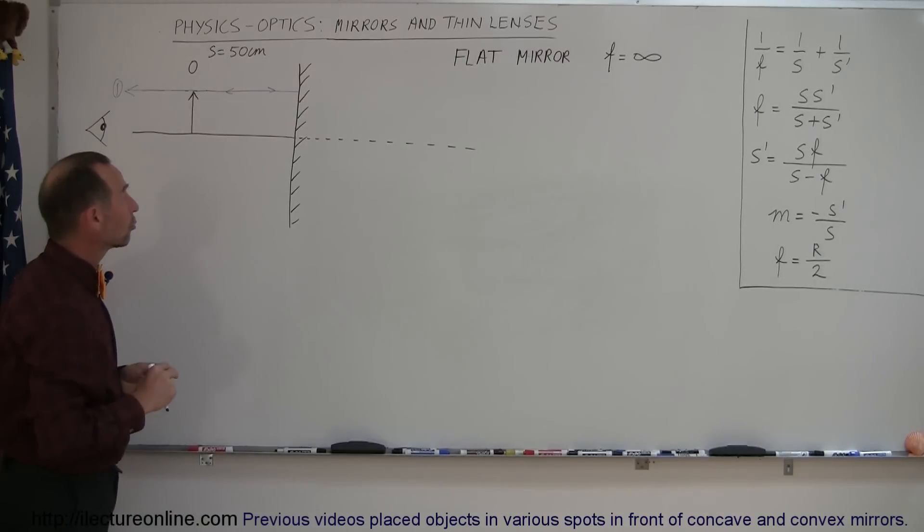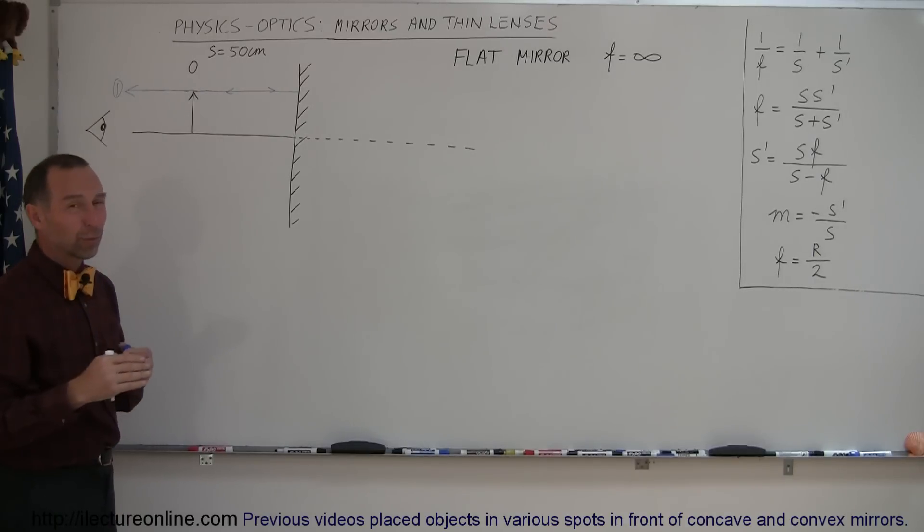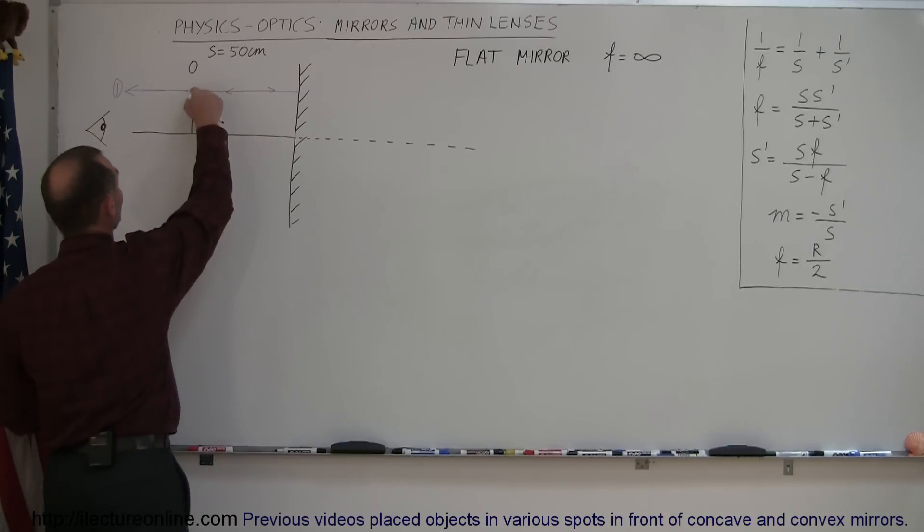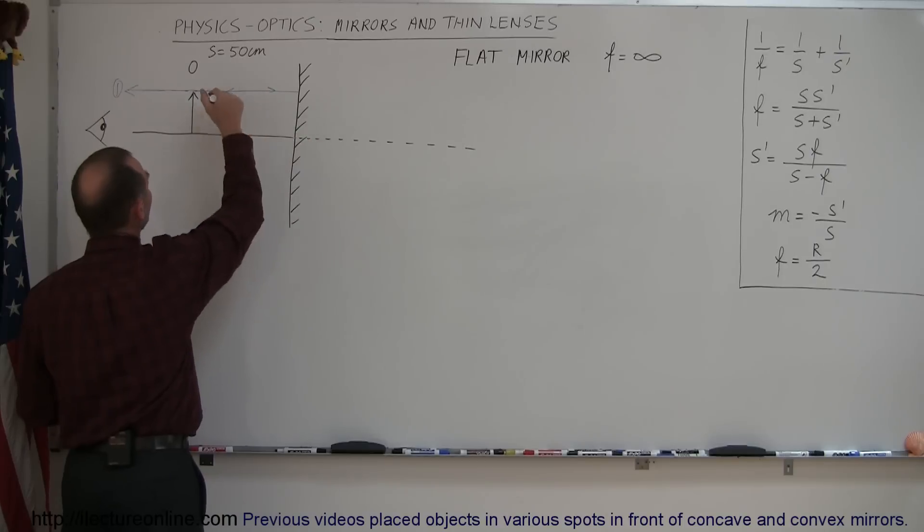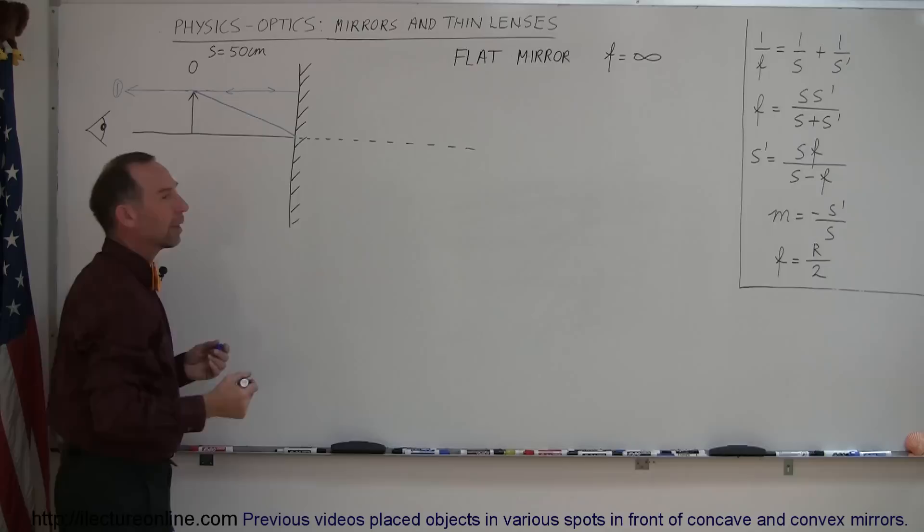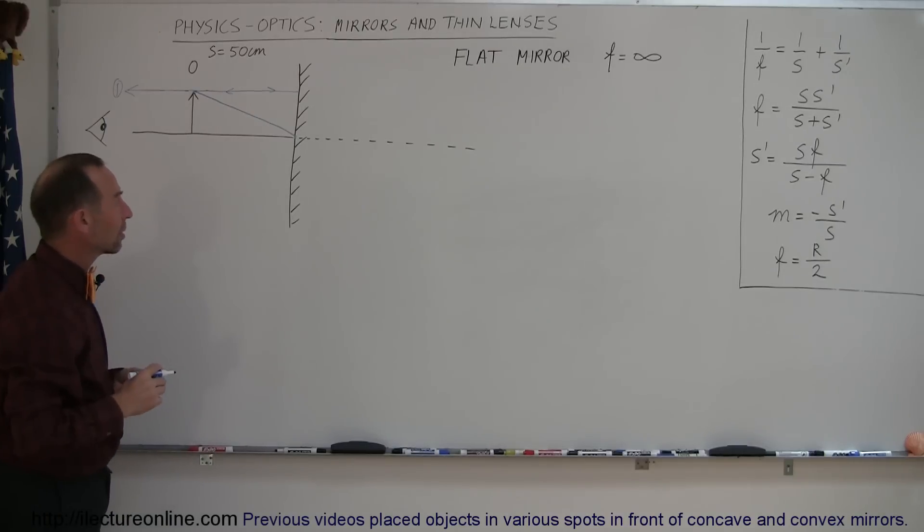The second ray we're going to draw is now a little bit different. Normally, we draw the ray through the focal point, but since there's no focal point here, or at least the focal point is infinitely far away, what we do instead is draw a ray from here to the mirror right there at the point where the normal hits the mirror.